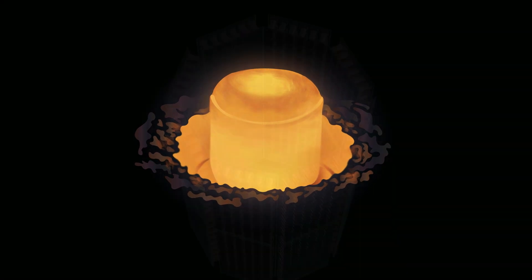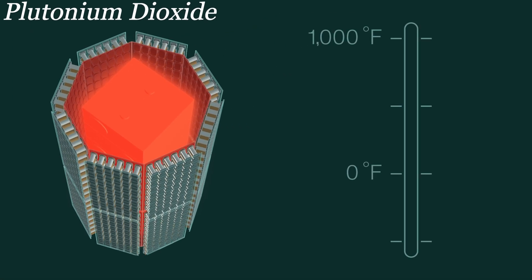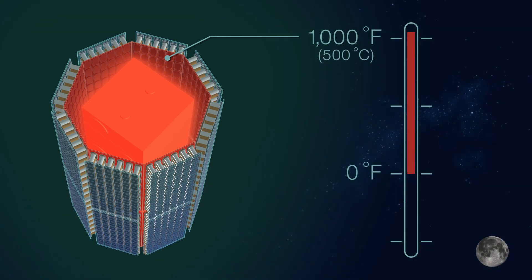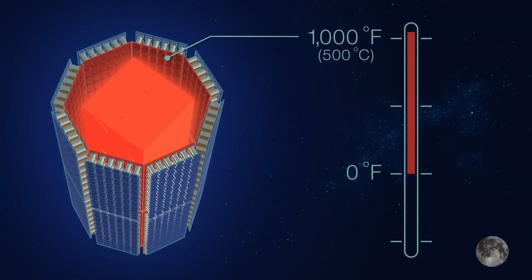The hot side of the thermocouples can be more than 1000 degrees Fahrenheit, or 500 degrees Celsius. The cold side faces out into space or into the atmosphere of a planet or moon, where the temperature can be well below zero.